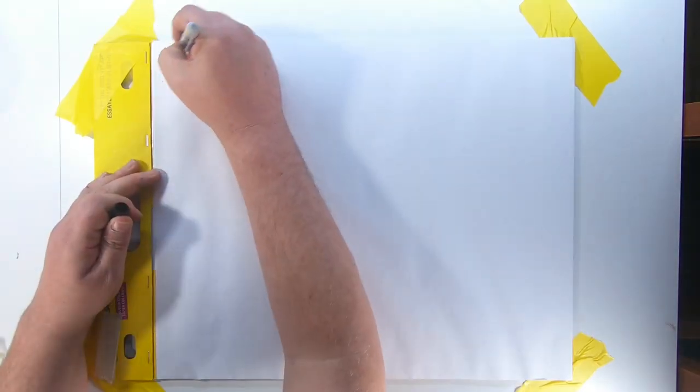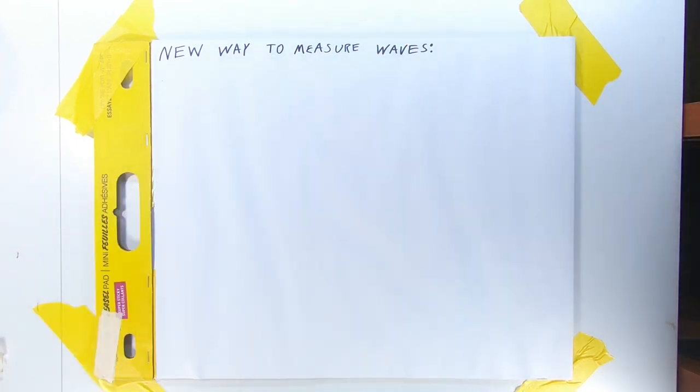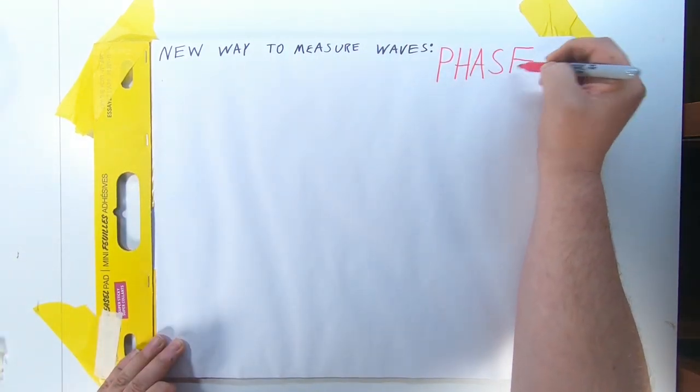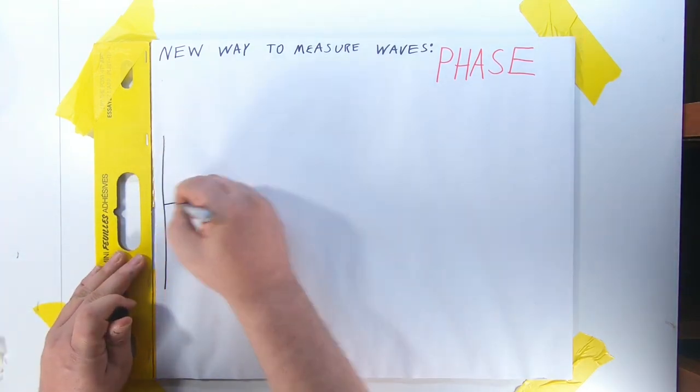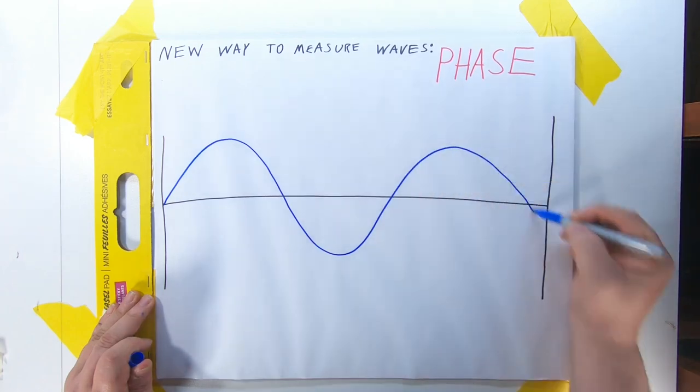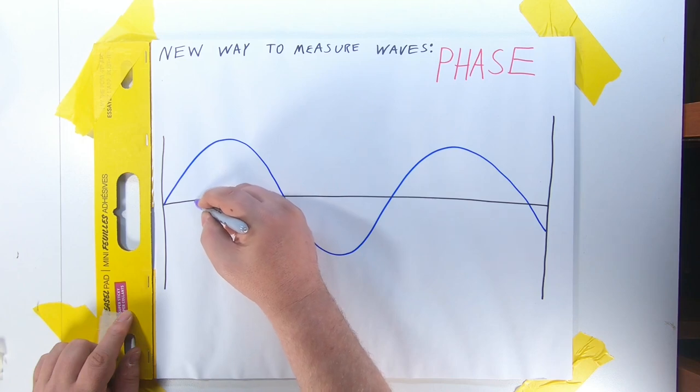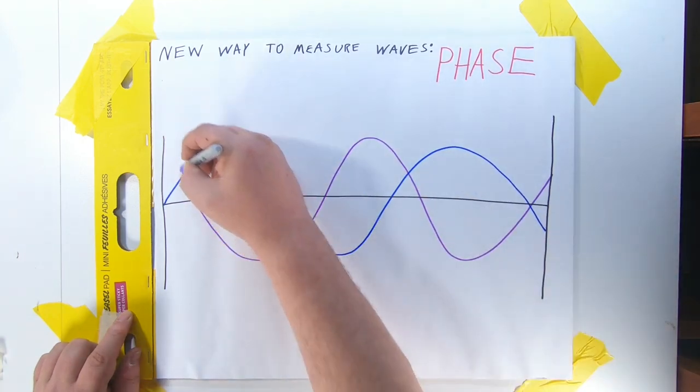Before we get started, we have to talk about yet another way to measure waves: phase. Simply, you can think of phase as the starting point for a wave. Waves do not all have to cross the zero point at the same time in the same direction. When waves do cross at the zero point simultaneously, they are considered in phase. When they are not, they are considered some degree out of phase.